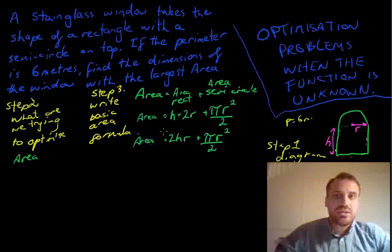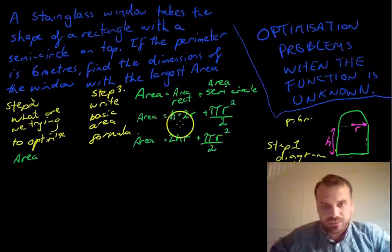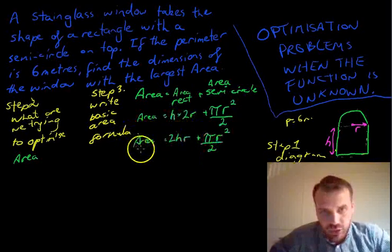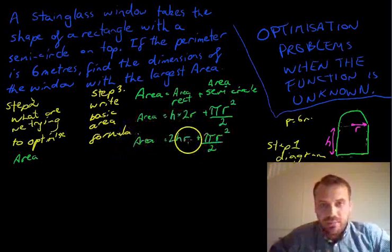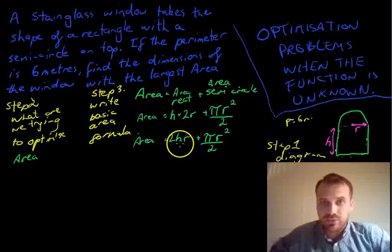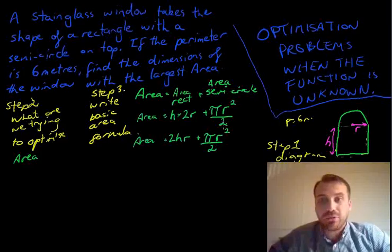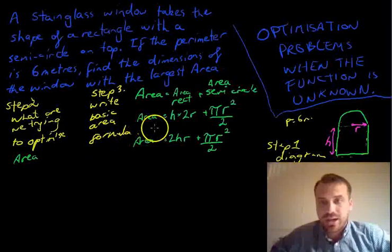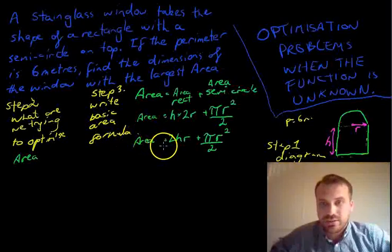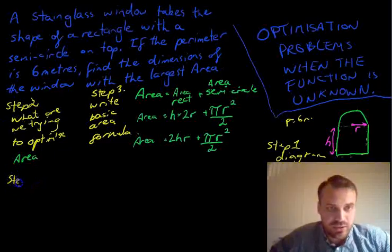Now, with all of these optimization problems when the function is unknown, you're always going to run into this problem where you're trying to optimize something, the area, but you end up here where you've got two variables, H and R. That's a problem for us. We need to find some way that H and R are related. So let's think a little bit about how are H and R related. And this is really step 4, I guess. Step 4: how are the two variables related?